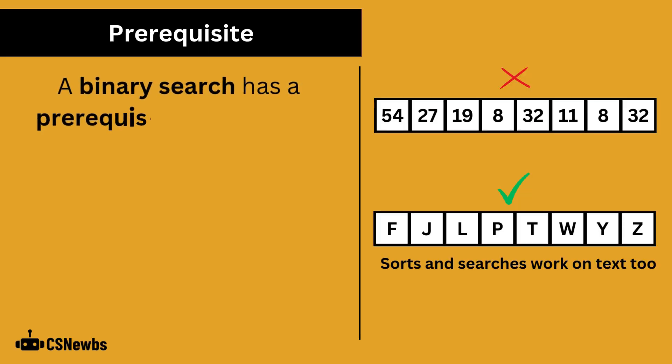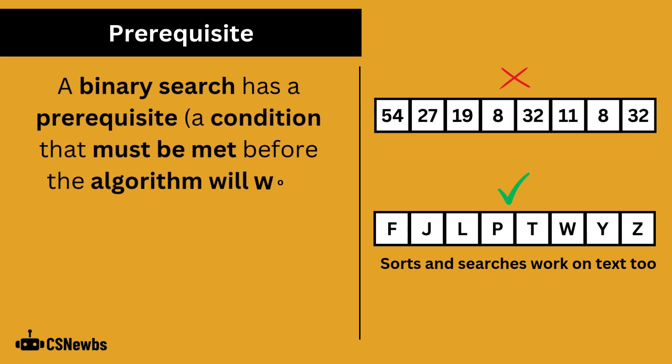A binary search has a prerequisite, which is a condition that must be met before the algorithm will work correctly. The prerequisite of a binary search is that the data must be sorted.